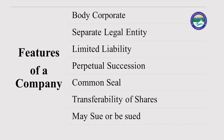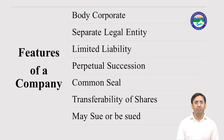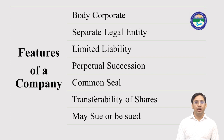The first feature is body corporate. Body corporate means the company is created by law. The company and the members of the company are separate from each other. The second feature is separate legal entity. Separate legal entity means the company and the members of the company called shareholders are different from each other. Even all the assets are being managed or maintained by the company itself. The company can even maintain or open its bank account in its own name.